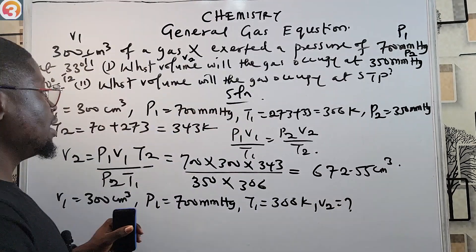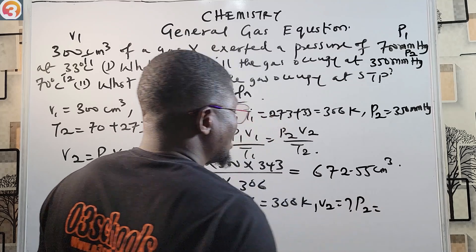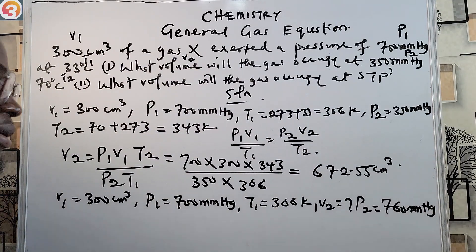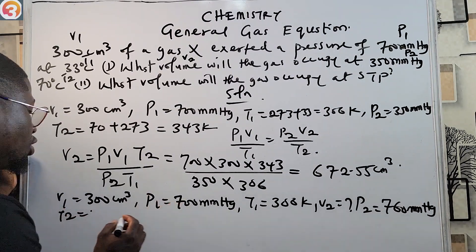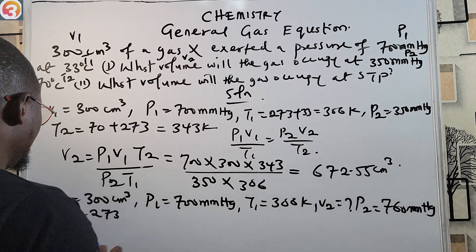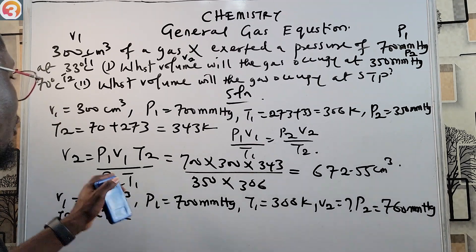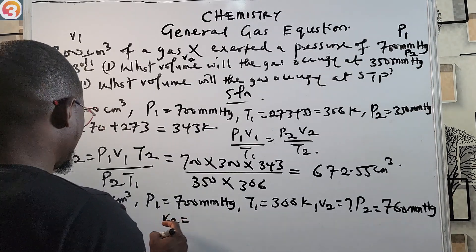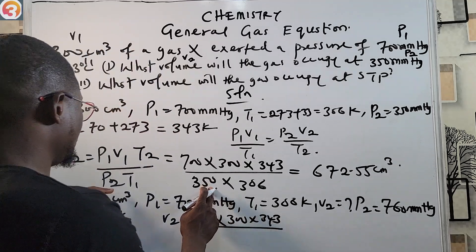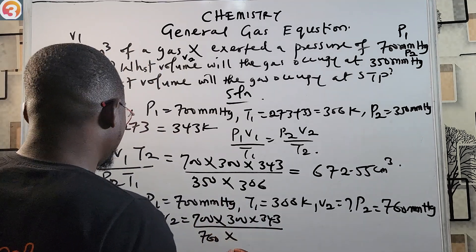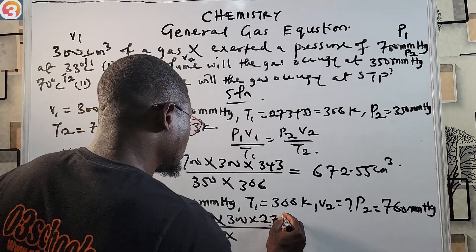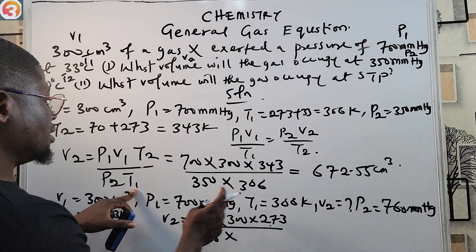At standard temperature and pressure, P2 = 760 mmHg — you must know that standard pressure is 760 mmHg. T2 = 273 K, which is standard temperature. We are still looking for V2. Plugging into the formula: V2 = (700 × 300 × 273) divided by (760 × 306).